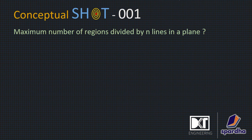Hello everyone! Here is the first conceptual shot on mathematics. This concept says that the maximum number of regions divided by n lines in a plane — meaning the lines are co-planar, all in one plane. The n lines will divide the plane into some number of regions. Let us understand this properly.